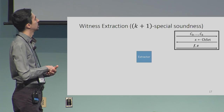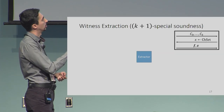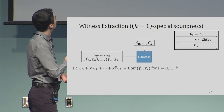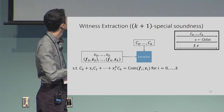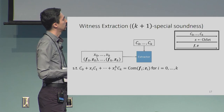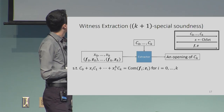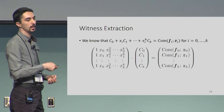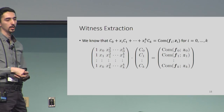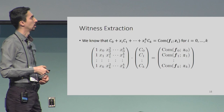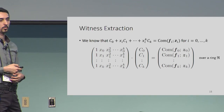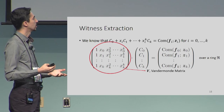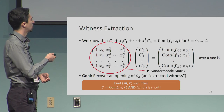We build a witness extraction procedure. The extractor receives K+1 commitments as the first move, then K+1 distinct challenges with accepting responses, so the degree-K equation is satisfied for i from 0 up to K, and we want to get an opening of CK. We can write this system of equations as a matrix-times-vector form: a Vandermonde matrix constructed from challenges, a vector of commitments, and their corresponding commitment computations, over some ring R.